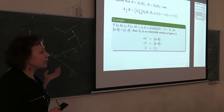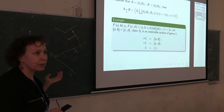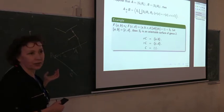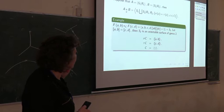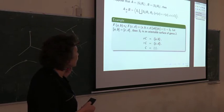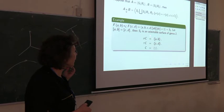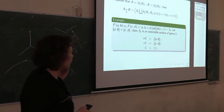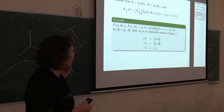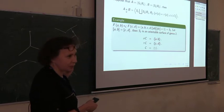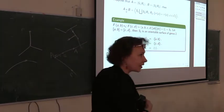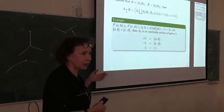The genus-two surface group can be obtained as the amalgamated product of two free groups: take the free group on generators A, B and the free group on generators C, D, and take the amalgamated product along the cyclic subgroup generated by one element. The map sigma sends the generator to the commutator [A,B], and map tau sends it to the commutator [C,D]. Exactly so, this surface group is an amalgamated product of two free groups.